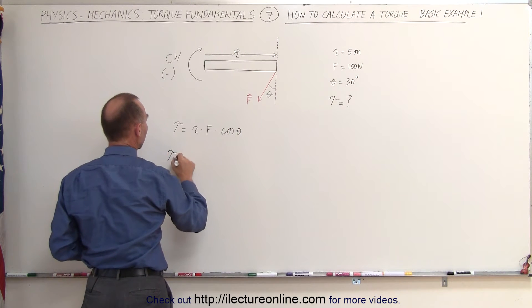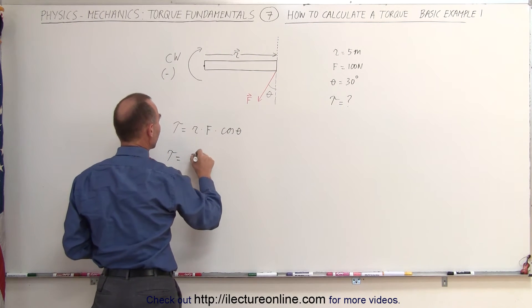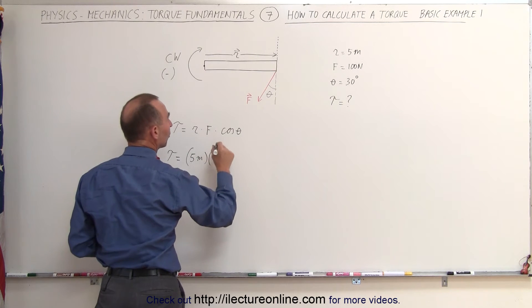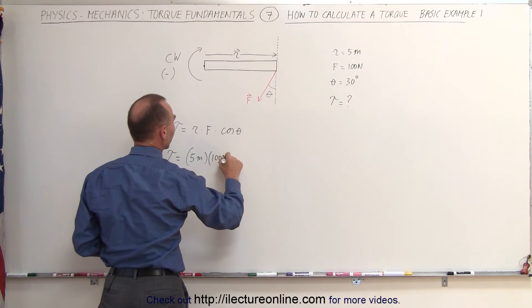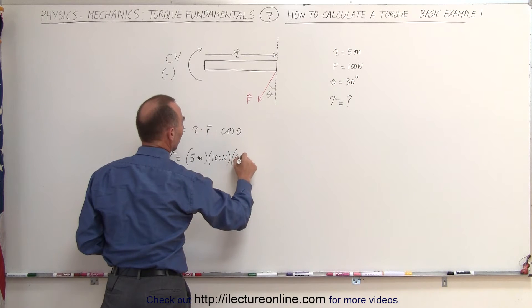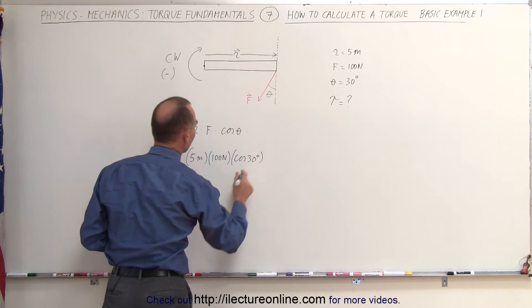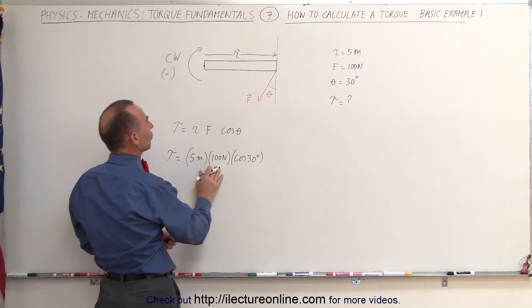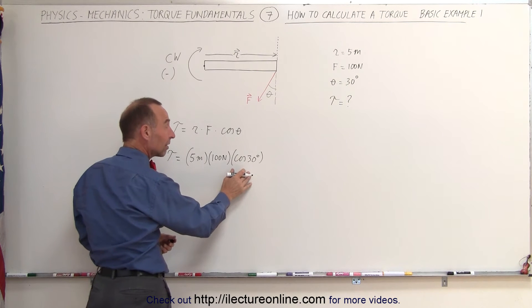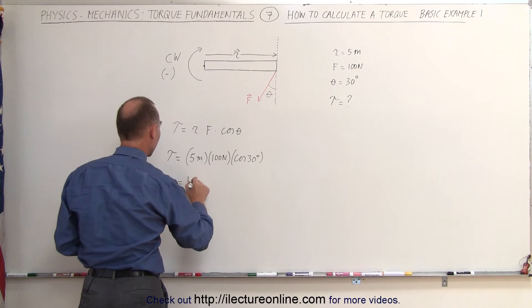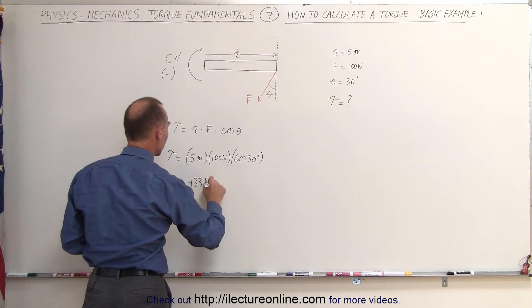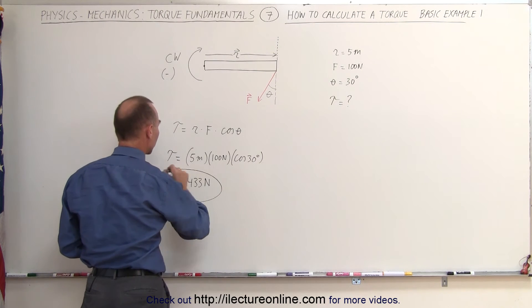The torque is equal to R, which is 5 meters, times the force, which is 100 newtons, times the cosine of 30 degrees. That would be 500 multiplied by 0.866, which equals 433. That's the magnitude of the torque.